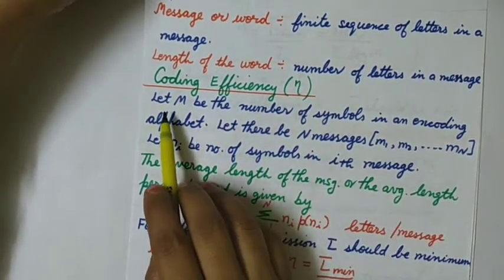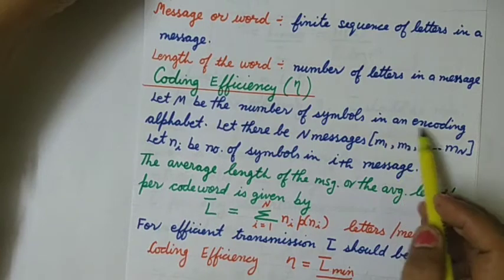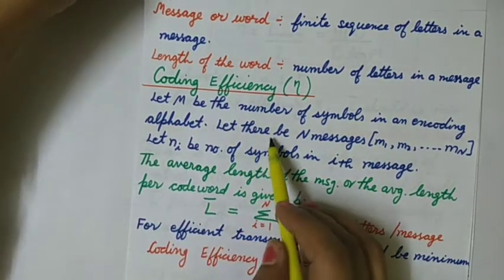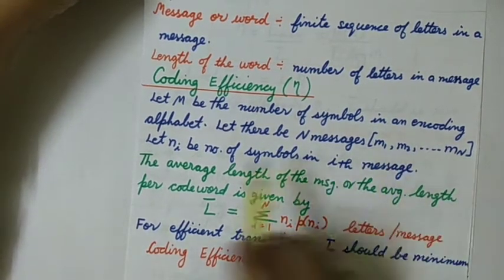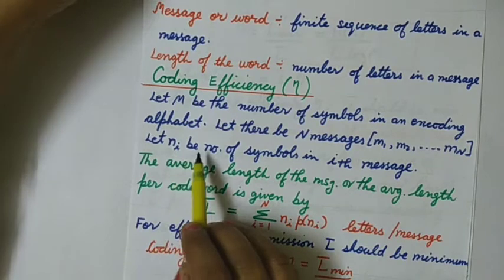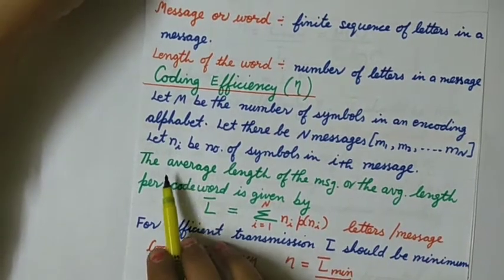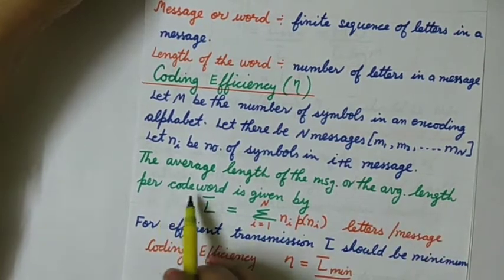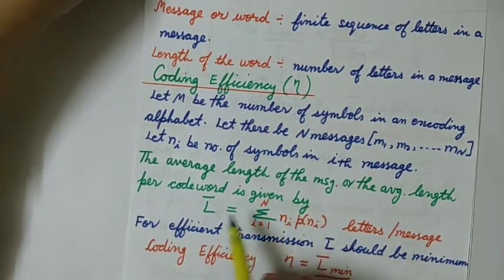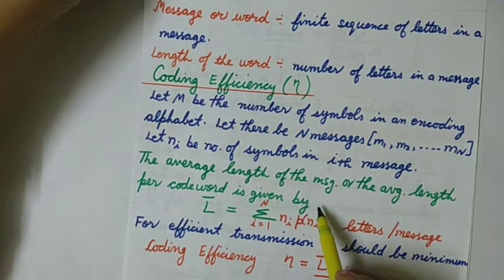Coding efficiency η represents how efficient a code is. Let capital M be the number of symbols in the encoding alphabet, capital N be the number of messages m1, m2, up to mN, and let n_i be the number of symbols present in the i-th message. The average length of the code word L̄ is obtained by the following expression.